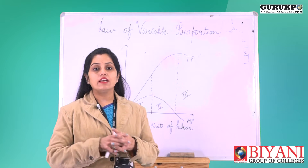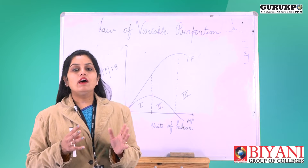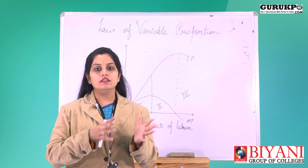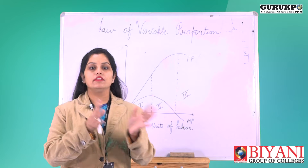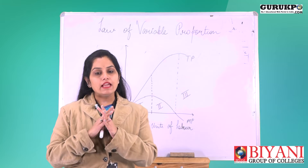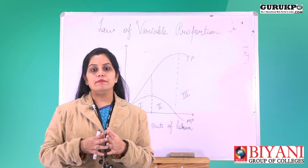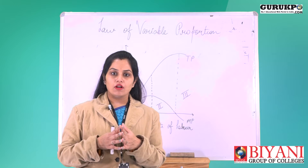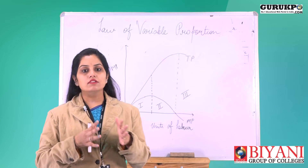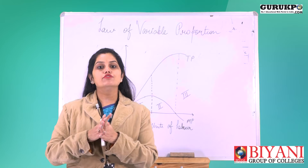Production is converting input into output. Inputs are the factors of production which convert raw material into finished goods. There are mainly four types of factors of production: land, labor, capital, and entrepreneur. Without all these factors of production, we cannot convert input into output.